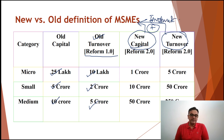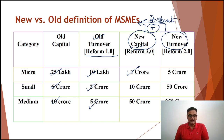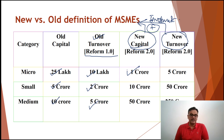For investment limits under the new definition, a single standardized limit is given instead of separate manufacturing and services limits. The investment limit is Rs. 1 crore for micro, Rs. 10 crore for small, and Rs. 50 crore for medium enterprises. For turnover, the standardized limits are Rs. 5 crore, Rs. 50 crore, and Rs. 250 crore for micro, small, and medium enterprises respectively.